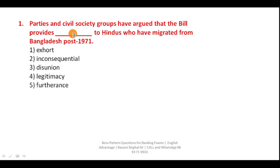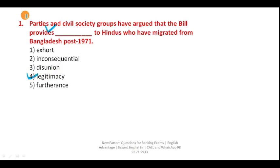In banking exam the official time given to you is 40 seconds, but I will teach you how to solve these questions in just four to five seconds. The basic trick is to find out the keywords, and on the basis of keywords you can solve these questions within seconds. For example: 'parties and civil society groups have argued that the bill provides...' — a bill will always provide legality, so here your correct answer is legitimacy.